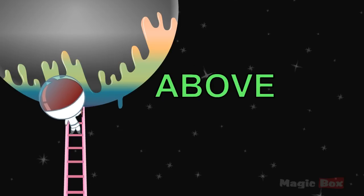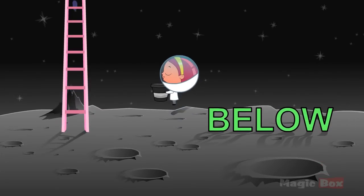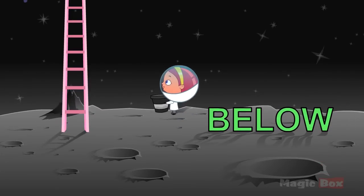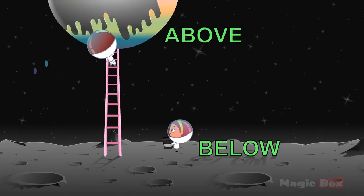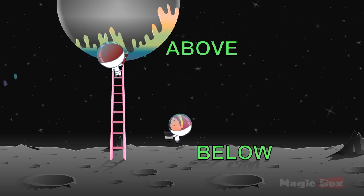Below and above. Children, Mikko is below, and up on the stairs is Nikko. He is above. So below and above are opposite to each other.